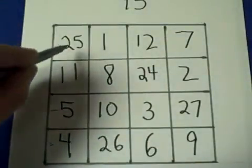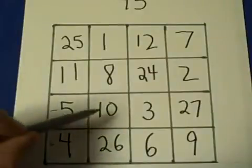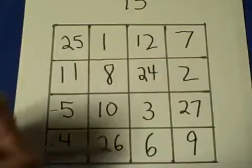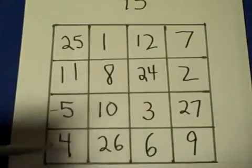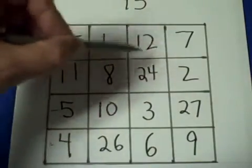If you add the 4 corners, the numbers add up to 45. If you take any block of 4 squares, a 2 by 2 block, these numbers will add to 45, these numbers will add to 45, these numbers will add to 45.